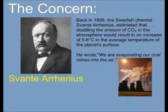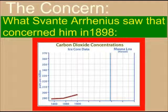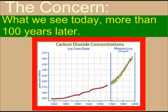The concern is that the Earth could have a runaway greenhouse effect. This was first proposed by a man named Svante Arrhenius, who said back in 1898 that if we doubled the amount of CO2 in the atmosphere, this could result in a temperature change of about 5 to 6 degrees Celsius. What he saw back in 1898 was a graph that might have looked sort of like this. About 100 years later today, the current estimation for the amount of carbon dioxide in the atmosphere is over 360 parts per million, which is very high.